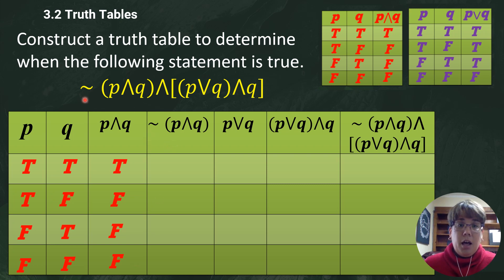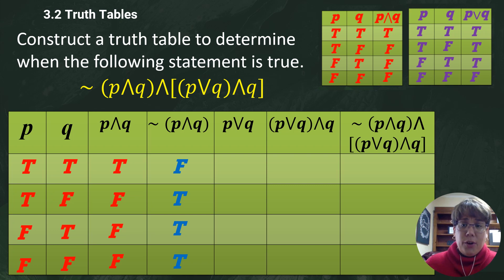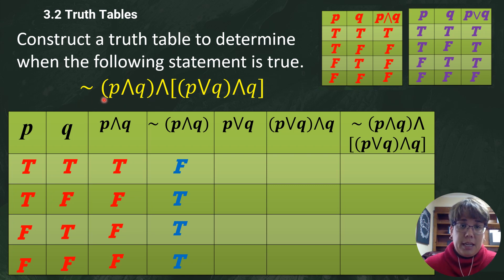For p AND q, it's only true when both p and q are true; everything else is false. I just copied it straight from my chart. For the next column, not(p AND q), all you have to do is take the opposite of everything in this column — if it's true, write false; if it's false, write true. That's pretty easy.